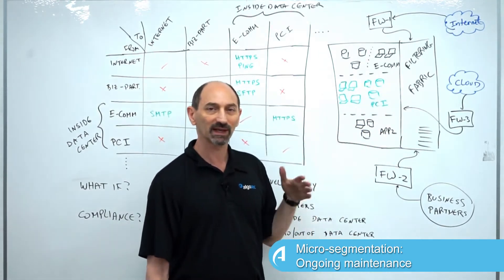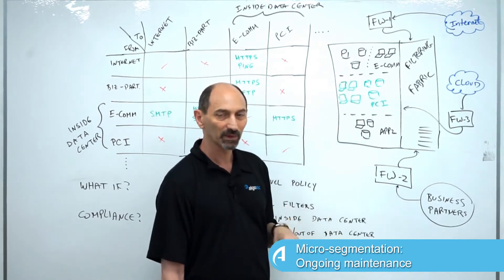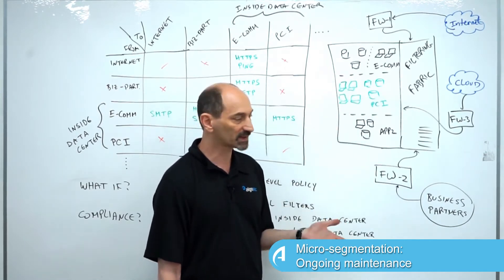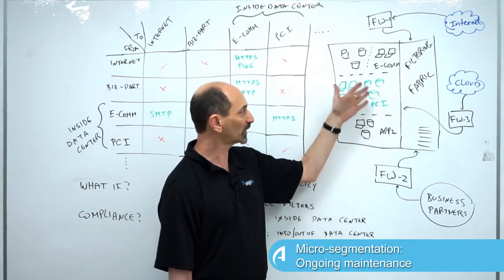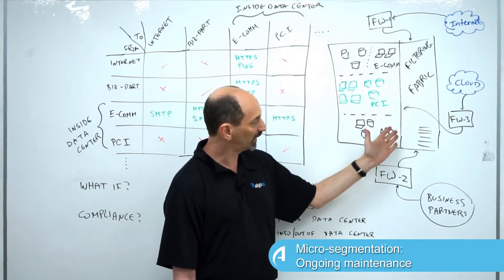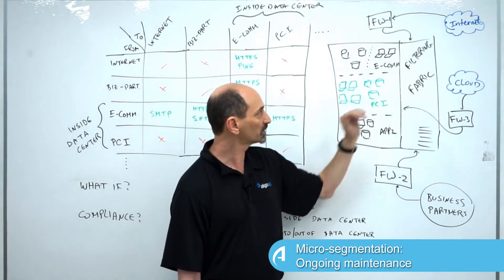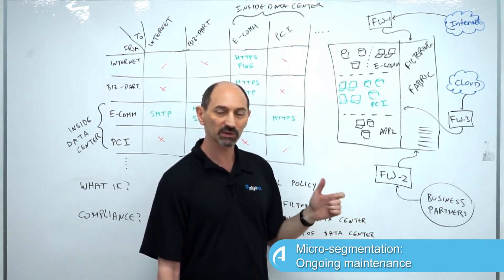We went through a discovery process. We discovered all the applications inside the data center and all the traffic flows that they rely on. We wrote that into a filtering policy that's enforced by the filtering fabric and we crossed the D-day at which we switched the policy from a default allow to a default deny.